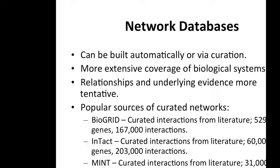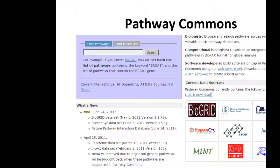Popular curated networks include BioGRID, based here in Toronto — curated interactions from literature covering 529,000 genes and 167,000 interactions. IntAct, a European project, has 60,000 genes and 203,000 interactions. The MINT database, based in Italy, has 31,000 genes and 83,000 interactions. The different ratios between genes and interactions indicate differences in curation and automatic inference algorithms used by each database, rather than differences in biology.